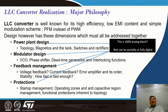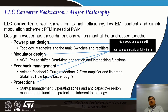LLC converters are very well known for high efficiency and hence very low EMI content due to soft switching and a simple modulation scheme. We use pulse frequency modulation instead of pulse width modulation — the duty cycle remains very close to 50 percent symmetric for the two arms and we vary the frequency to provide regulation of output voltage or output current. There are four characteristic dimensions which must be addressed together: first, the power plant design — once the topology, magnetics, switches, and rectifiers are chosen, we can make the power PCB separately and independently test the power plant.